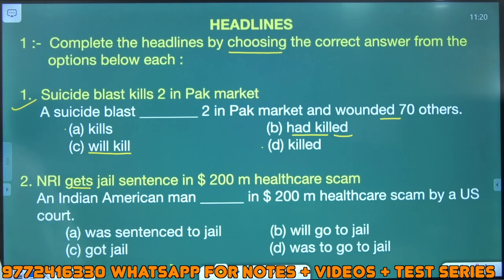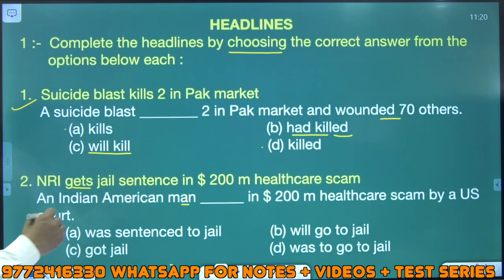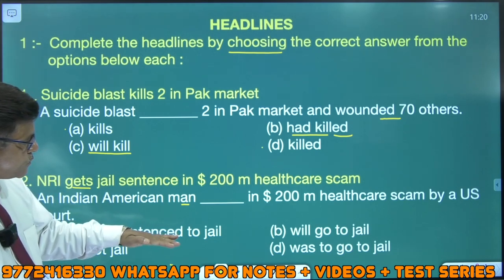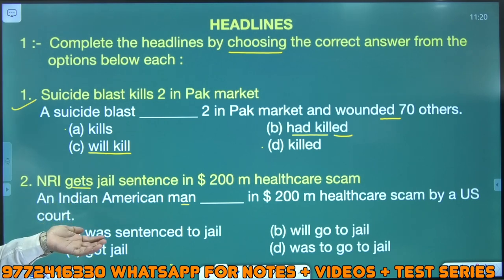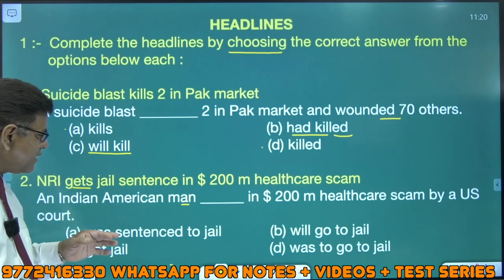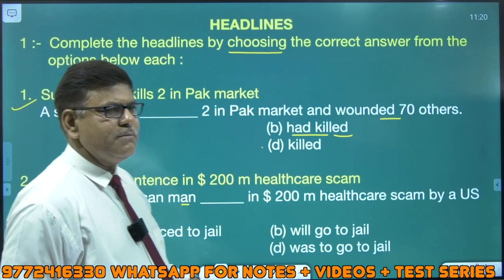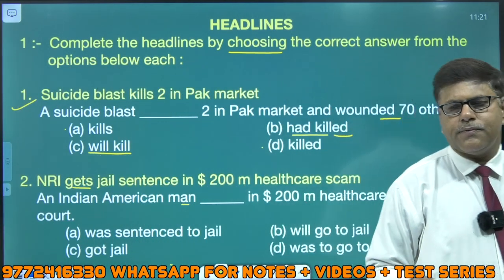An Indian American man — dekhiye, ek man hai, ek. Agar plural hote hain to M-E-N hota hai. An Indian American man — what sentence to jail? In 200 million healthcare scam by a U.S. court. Will go to jail — jaayega. Got jail means jail mil gayi. An Indian American got jail in — yeh matlab hi ulta ho gaya, ki kisi Indian American ko jail mil gayi 200 million healthcare scam karne ke baad. Meaning entirely changes — absurd meaning aa jaayega.